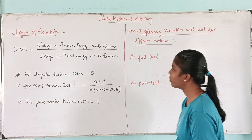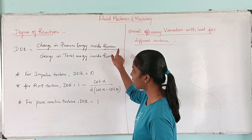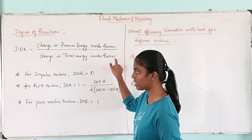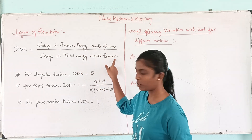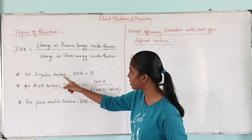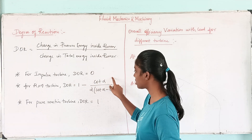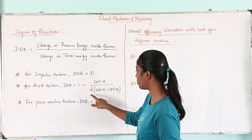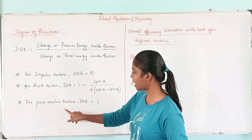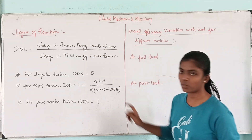So, degree of reaction is a ratio of change in pressure energy inside the runner to the change in total energy inside the runner. For impulse turbine, degree of reaction is 0. For reaction turbine, the formula is 1 minus cot alpha divided by 2 times of cot alpha minus cot theta. For pure reaction turbine, degree of reaction is 1.